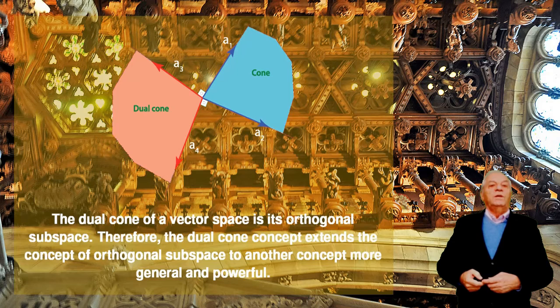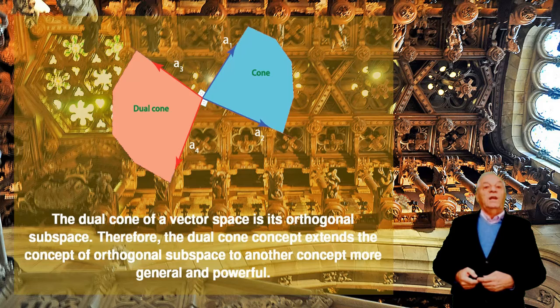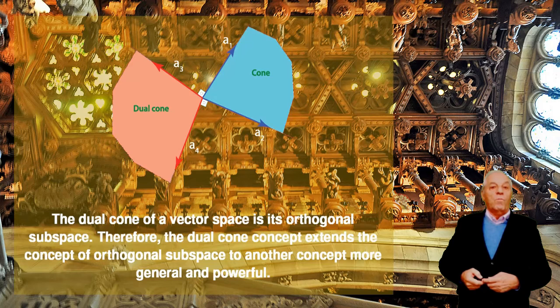Then, if the angle between a vector and A3 is greater than 90 degrees, the dot product is negative, and if it is less than 90 degrees, it is positive. Thus, we have to select vectors such that they form an angle of 90 degrees or more with all vectors in the cone, shown in blue.